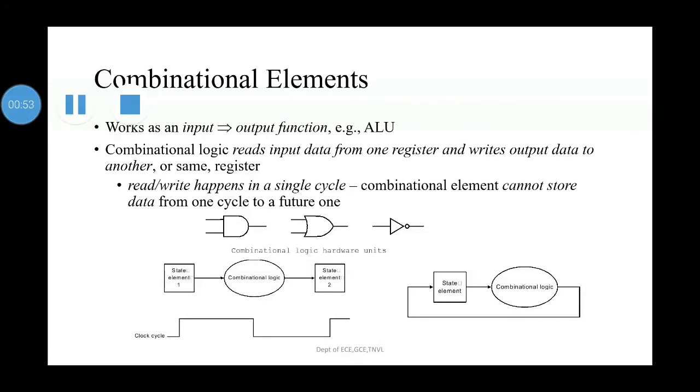Combinational elements are elements that operate on data values, which means that their output depends only on the current inputs. Given the same input, a combinational element always produces the same output. For example, an arithmetic and logic unit. This combinational logic simply reads the input data from one register and writes output data to another or the same register.